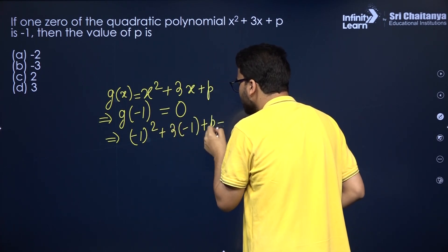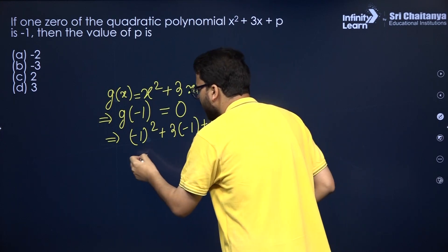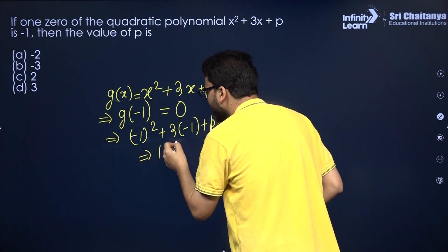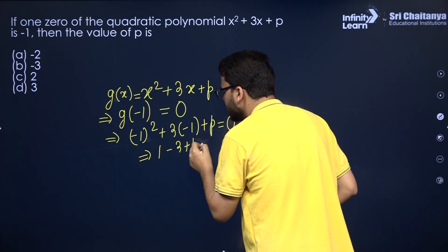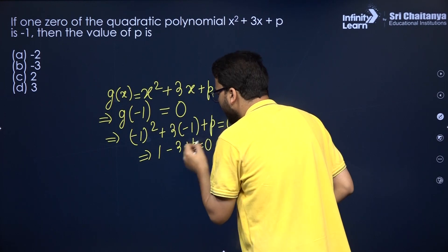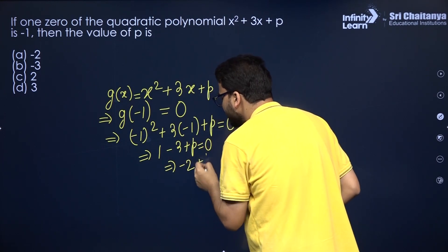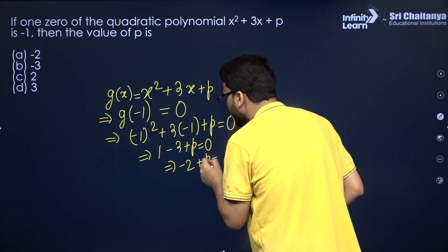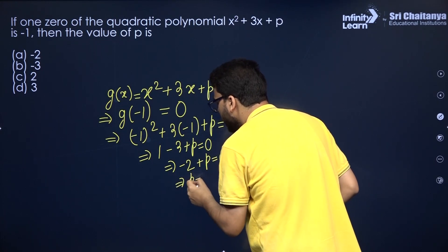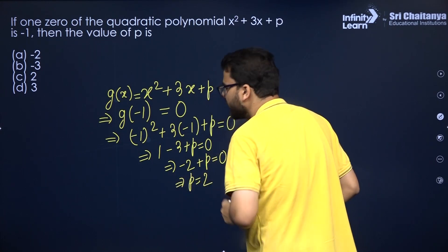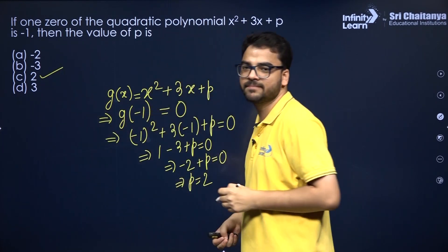That is equal to 0. This gives us 1 − 3 + p = 0. Simplifying, −2 + p = 0, so p = 2. Out of the given options, p = 2 is the answer.